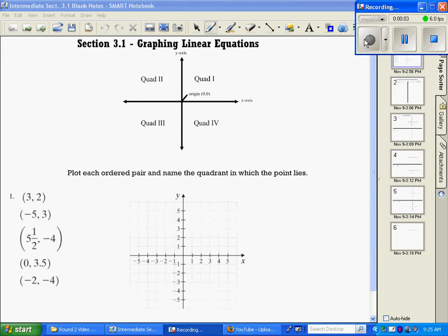Section 3.1 is going to be graphing linear equations. First of all, we're going to look at our Cartesian coordinate system, and this is going to be quadrant 1. Then we have quadrant 2 right here, quadrant 3, quadrant 4, so they go counterclockwise. Our origin is the point (0,0). This is going to be our x-axis, and this is going to be our y-axis.